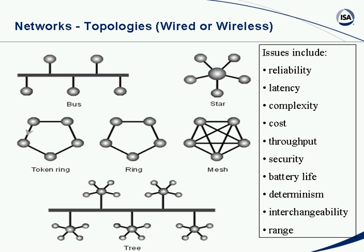Determinism is an issue here. In a star network going point-to-point, you have determinism well in hand. But in a mesh network, determinism can vary depending on how your signal ends up being routed. This introduces the point that a logical network could in fact be different from the physical network — the Internet, for example, is logically a mesh network where you are logically connected to anybody else on the net, but in physical reality these get sent through routers, so sometimes the physical network is not the same as the logical network.